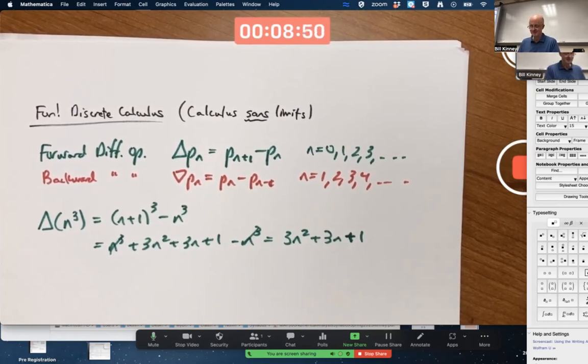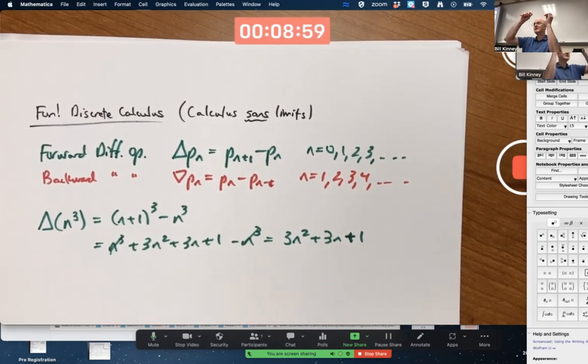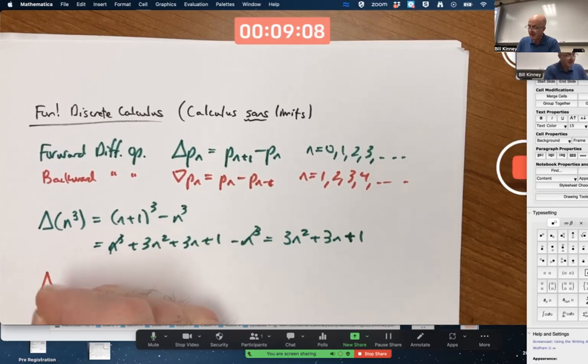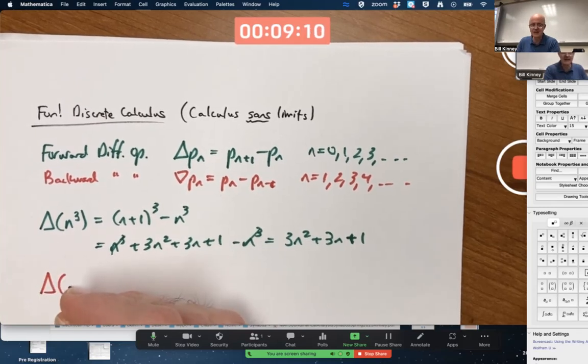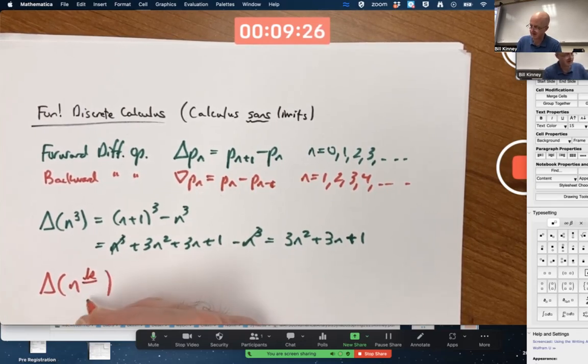But you might wonder, is there an analog of the power rule that works better, where you just bring down the exponent and subtract 1 from it? And the answer is yes, there is an analog of the power rule. And the analog is that instead of raising N to a particular positive integer power K, you raise it to the falling power of K. That's called a falling power.